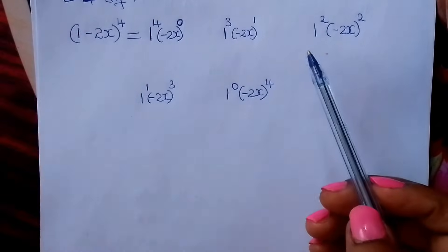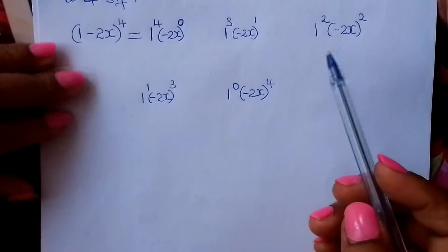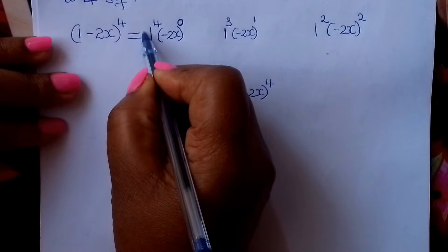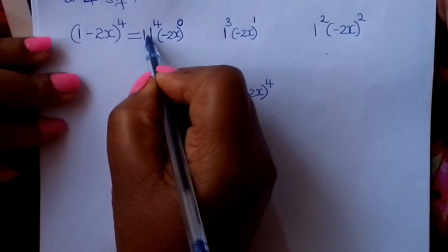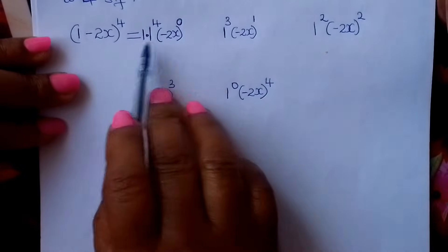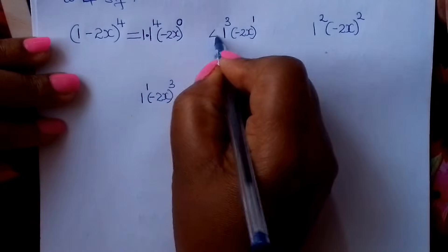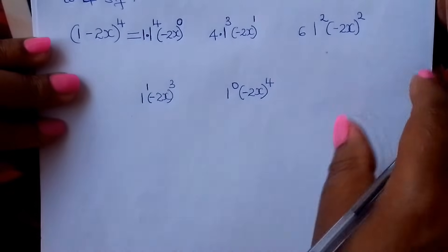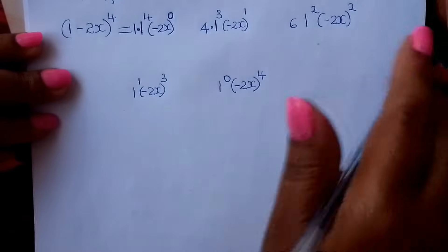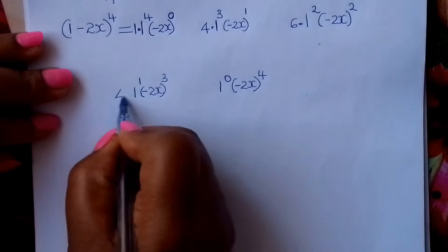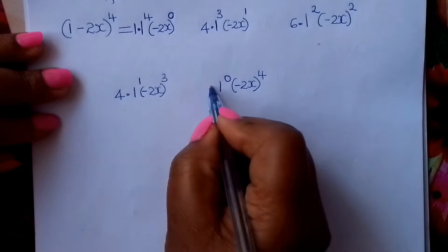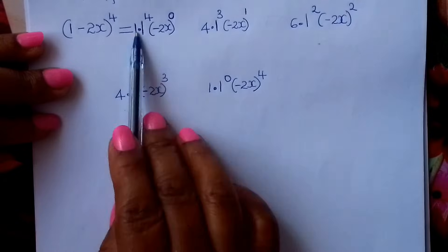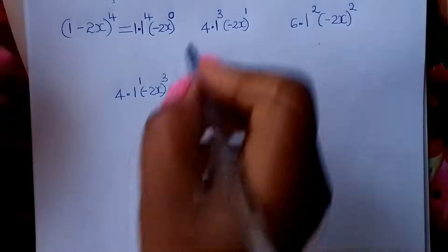Then you come and fix your coefficients. You go to Pascal's triangle to get your coefficients. The coefficients here are 1, then 4, then 6, then 4, and finally 1. All the dots represent multiplication.